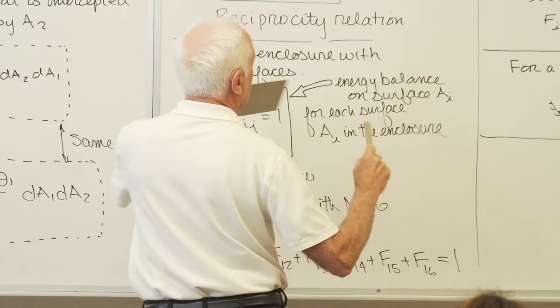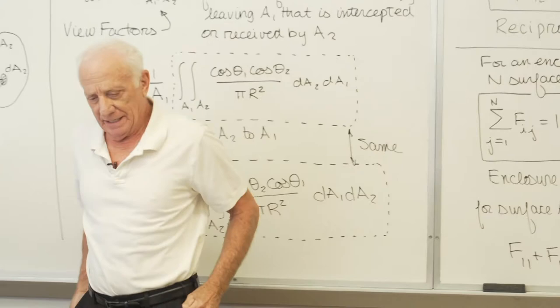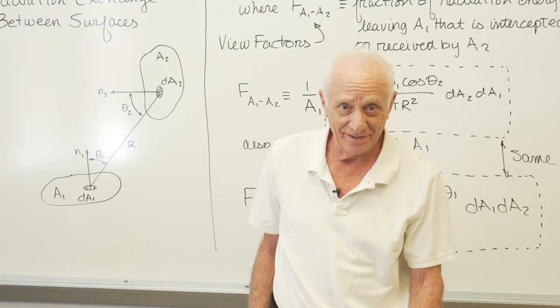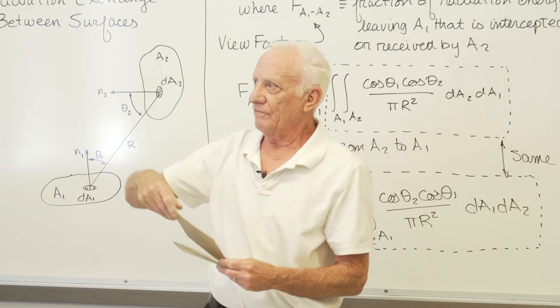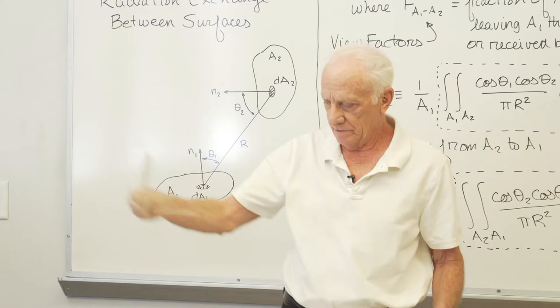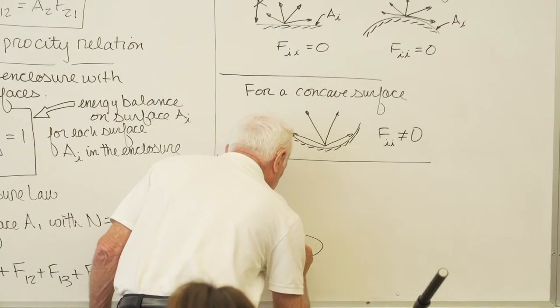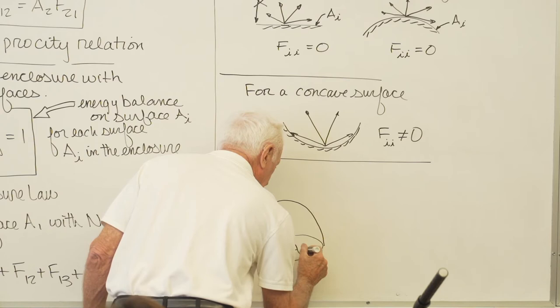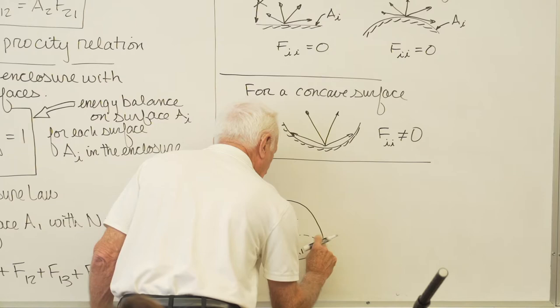If two plane surfaces are parallel and facing away from each other — placed up on the table like this — how much energy leaving surface 1 directly strikes surface 2? Zero. F1-to-2 is zero. Now let's take a simple example: a circular area A1 and the hemisphere above it, call it A2.